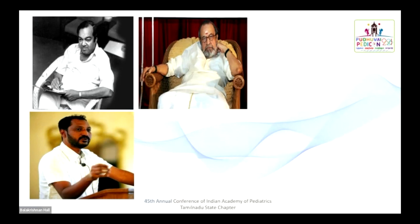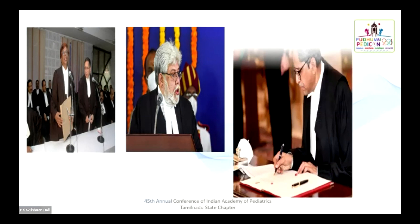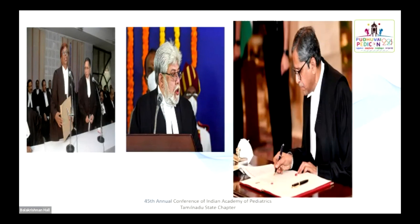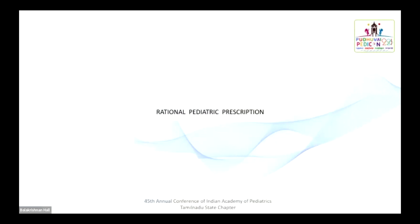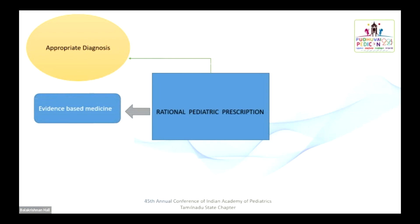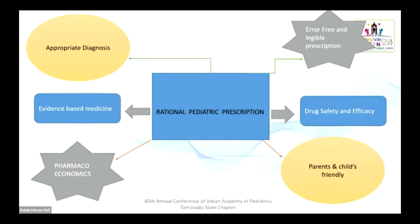In my view, all pediatricians are like poets — every day they write 50 to 100 prescriptions for the sake of their audience, the parents, while maintaining rationality. They are also good judges, writing a powerful verdict on each prescription by considering all prescription factors. The take-home message while prescribing a rational prescription: appropriate diagnosis, evidence-based medicine, pharmacoeconomic consideration, error-free and legible prescription, drug safety and efficacy maintained, and it should be a parent and child-friendly prescription.